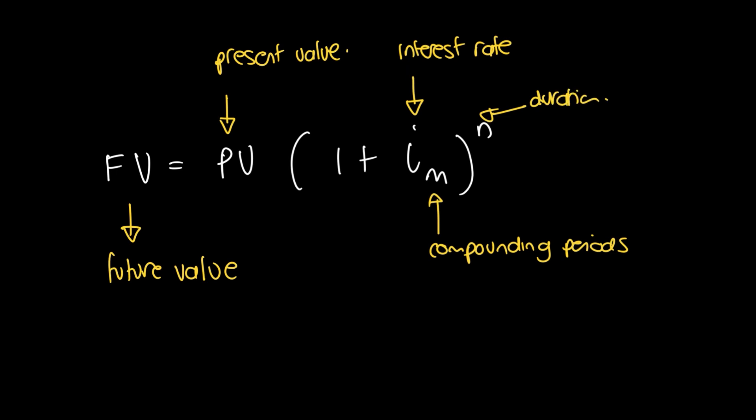When you're doing this, your units for n and m need to coincide. So if m equals 12, meaning monthly, then your n needs to be in months. So we have the compound interest formula: FV equals PV times (1 plus i_m) to the power of n.